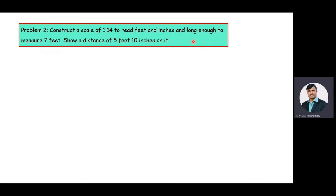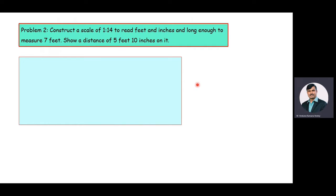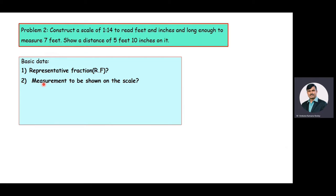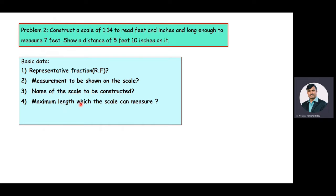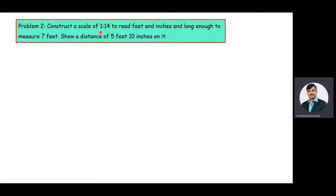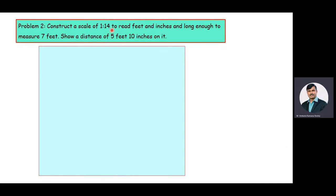We will extract data from the given problem by answering the following questions: first, what is the representative fraction value? Second, what is the measurement to be shown on the scale? Third, what is the name of the scale to be constructed? Fourth, what is the maximum length the scale can measure? Fifth, what is the length of the scale value in centimeters? The RF value is 1 by 14.